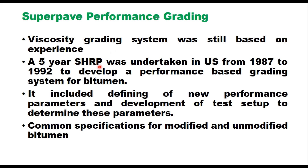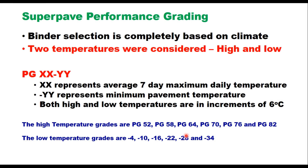A five-year Strategic Highway Research Program was undertaken in the United States from 1987 to 1992 to develop a performance-based grading system for bitumen. It included defining new performance parameters and developing test setups to determine these parameters. The target was to have common specifications for both modified and unmodified bitumen. As a result, binder selection is completely based on climate, considering two temperatures: a high temperature and a low temperature.